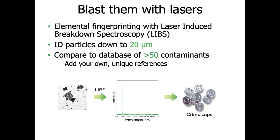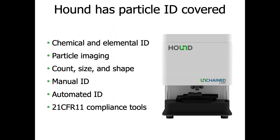By combining microscopy, Raman, and laser induced breakdown spectroscopy on a single platform, Hound lets you characterize and investigate the vast majority of particles you would realistically run into in your environment. The instrument can be used manually when you have a few particles, or in automated mode when you have tens, hundreds, or thousands. Having everything on one platform with a single sample prep and a single piece of software — where you can switch between spectroscopies with a click of a button to identify anything from protein aggregate to stainless steel — and the ability to create your own custom reference library easily could really help you accelerate the identification and work through your root cause investigation.